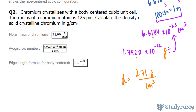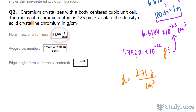We'll be following the exact same steps as in question 1. The first thing we want to do to calculate the density is find the mass, because density is a measure of mass over volume. To find the mass of a single chromium atom, we'll use the molar mass and multiply it by the reciprocal of Avogadro's number, giving us grams per atom.